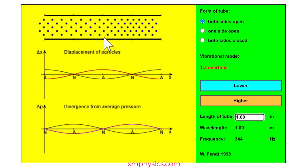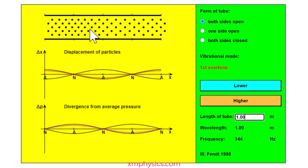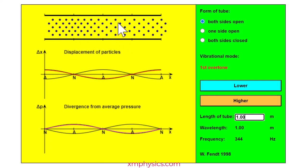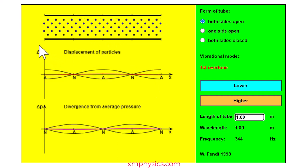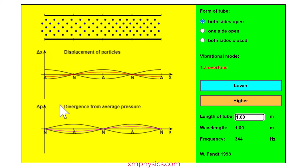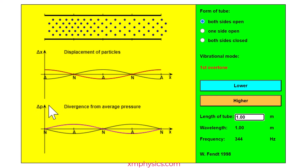Here we have an applet that illustrates the standing sound wave formed in an open pipe. Basically it's showing how the air density varies with time in the open pipe. We can describe what's happening in a pipe by using the displacement-position graph, or since we're talking about a pressure wave here, we can also use the relative pressure-position graph.